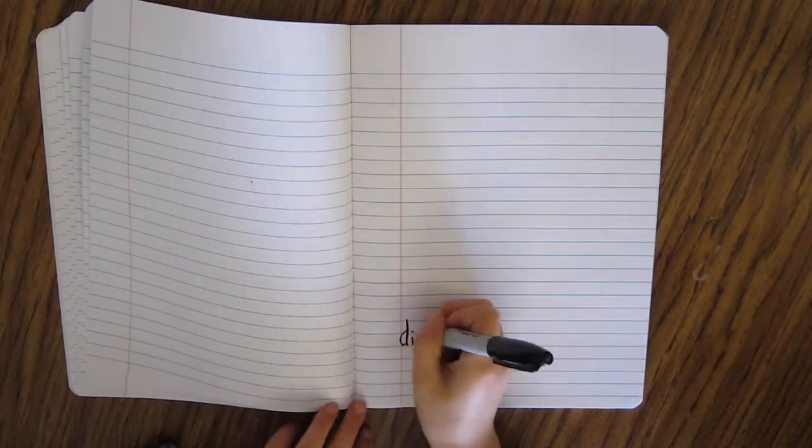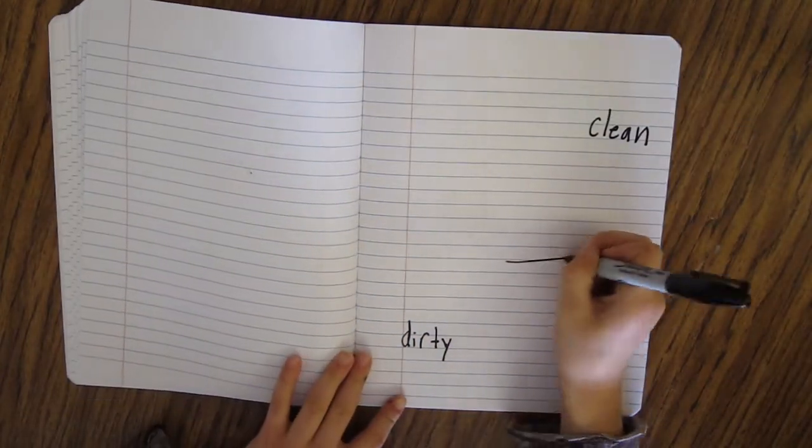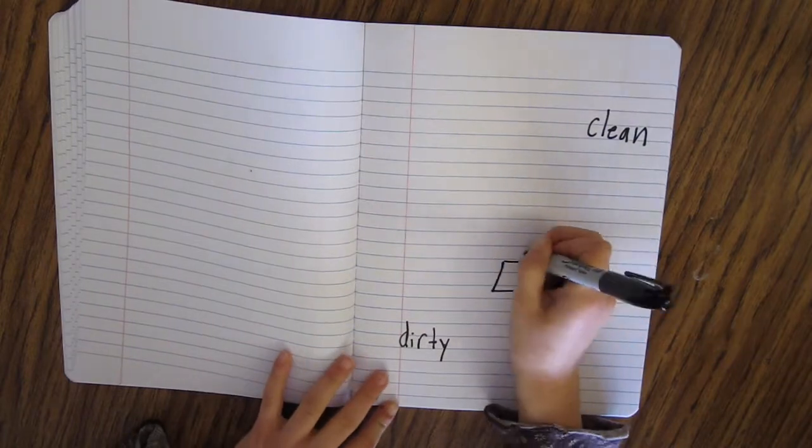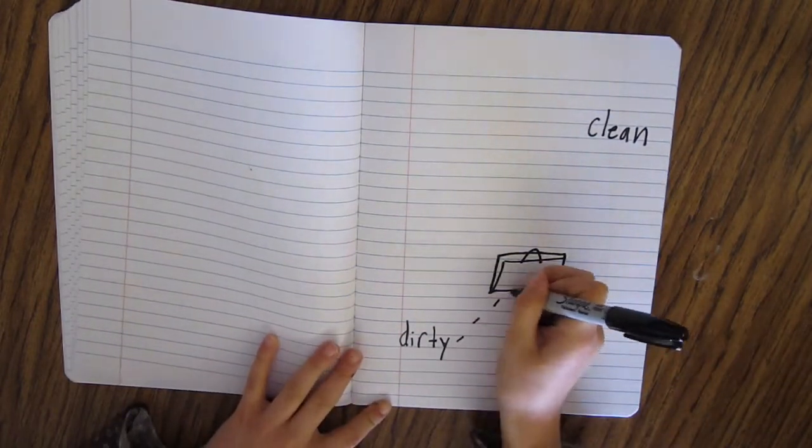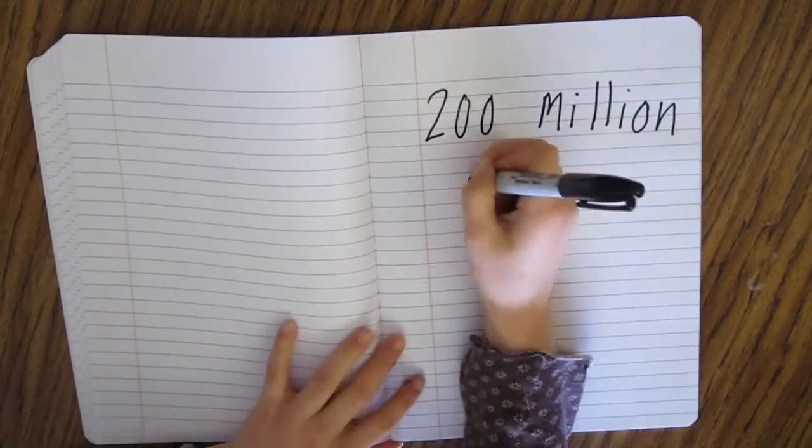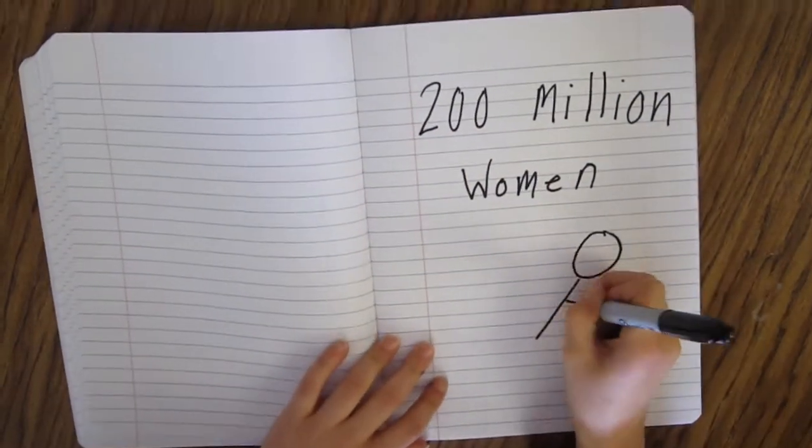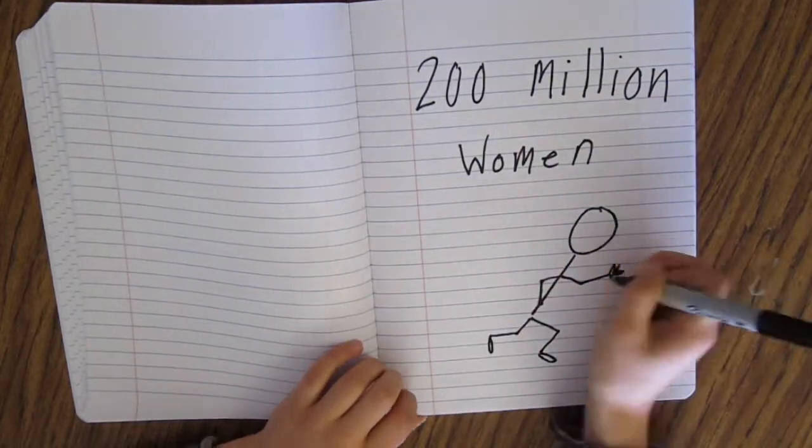The physical and economic scarcity of water forces people to travel long distances to get the safe water they need. Every day, 200 million women and girls walk for water, every drop their families use.